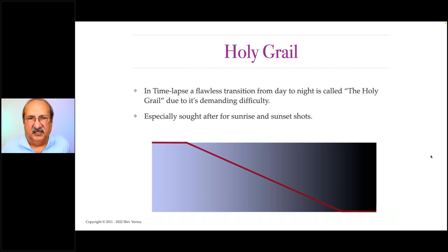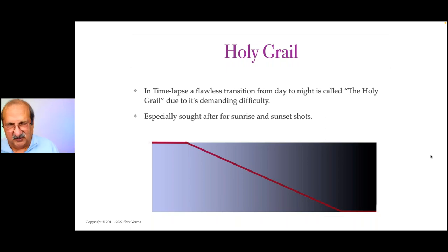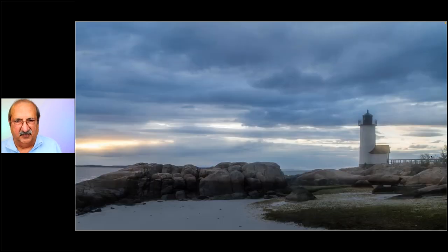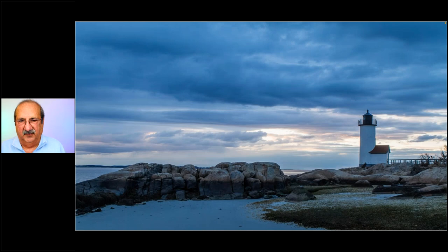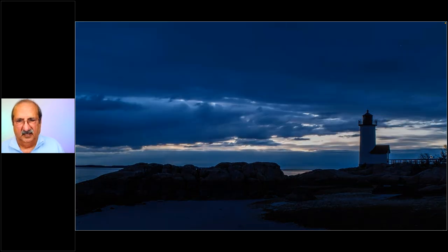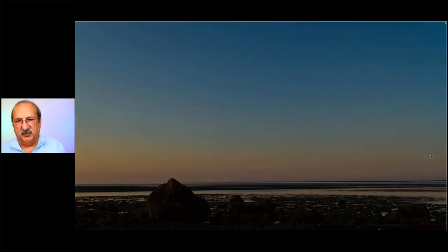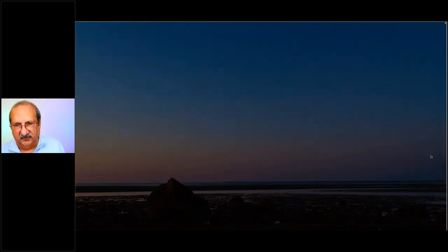The Holy Grail is basically something we call a flawless transition going from day to night or night to day. This is great for doing sunrises and sunsets — it's a good experiment. Here's an example of a day-to-night transition, and also a sequence of day to night with the tide moving out where the exposure really changed because of the reflectivity of the water.